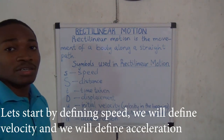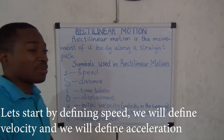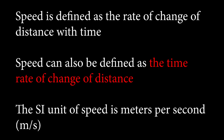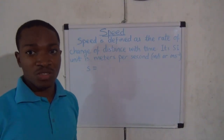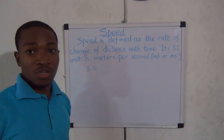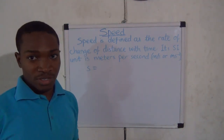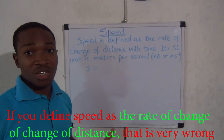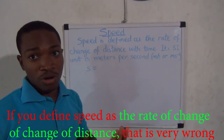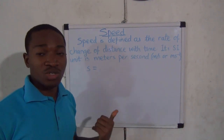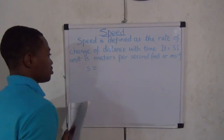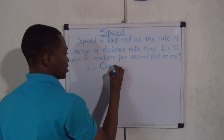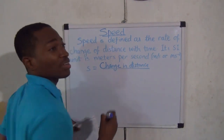Let's start by defining speed, defining velocity, and defining acceleration. Speed is defined as the rate of change of distance with time — or the time rate of change of distance. If you define speed simply as the rate of change of distance, that is wrong. You have to specify that the rate is with respect to time. So speed is defined as the change in distance divided by the time taken.